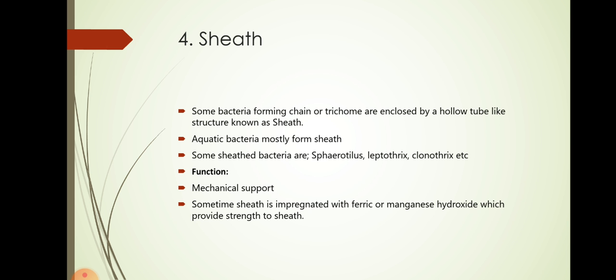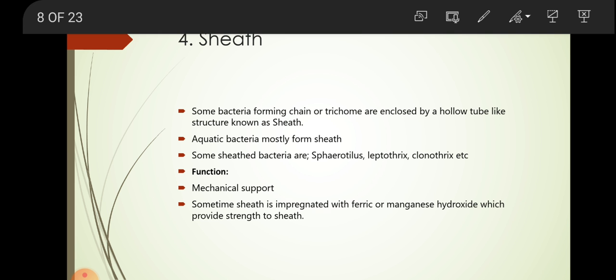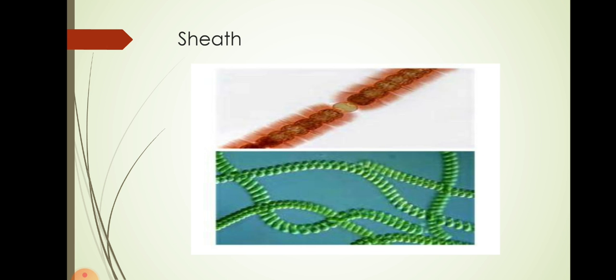Moving on to the next structure, sheath. Some bacteria forming chains or trichome are enclosed by a hollow tube-like structure known as sheath. Aquatic bacteria mostly form sheath. Some sheathed bacteria are Sphaerotilus, Leptothrix, Clonothrix, etc. The function is to provide mechanical support. Sometimes sheath is impregnated with ferric or manganese hydroxide which provides strength to the sheath. Here is a bacteria forming a sheath, a picture of bacteria with a sheath.